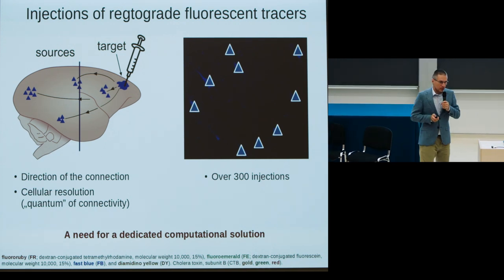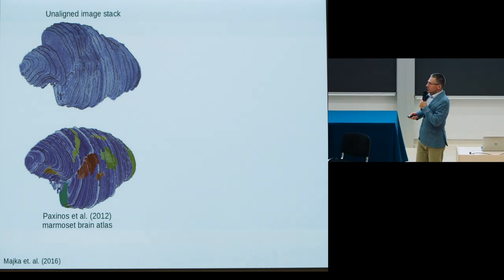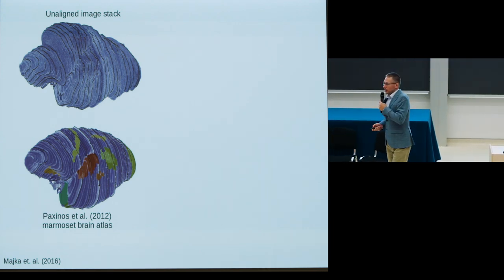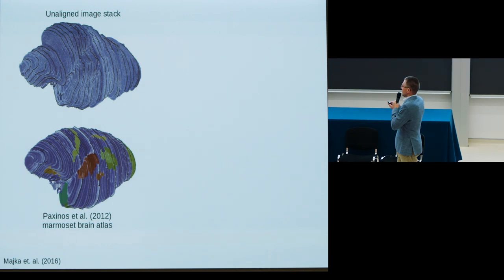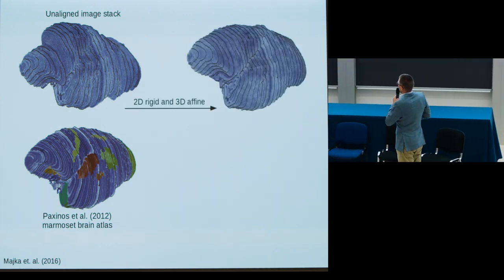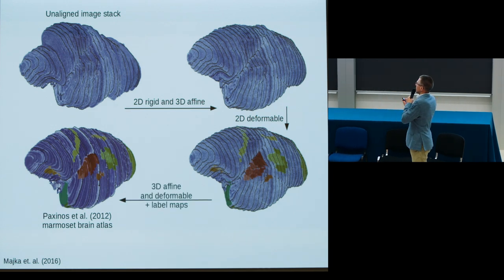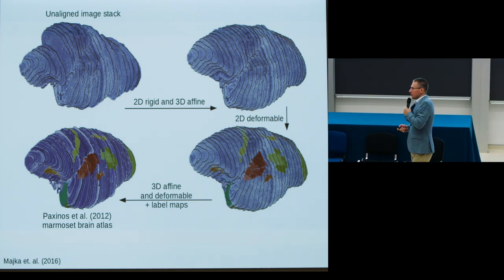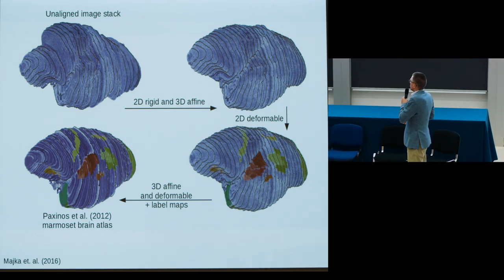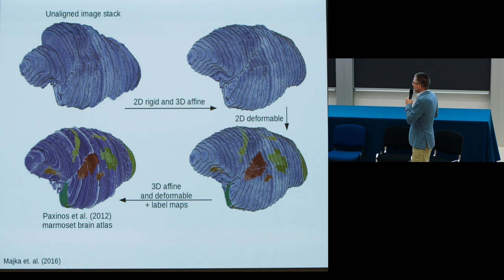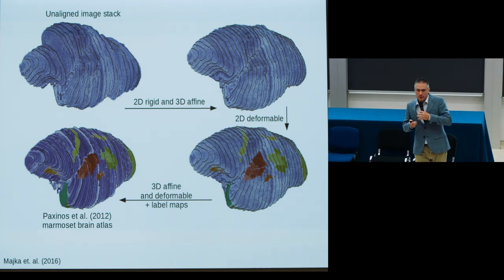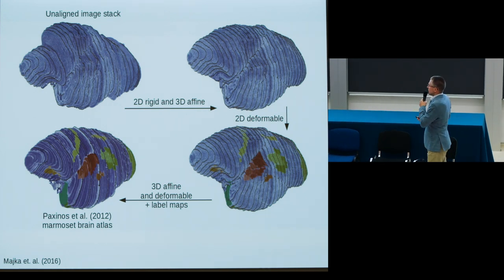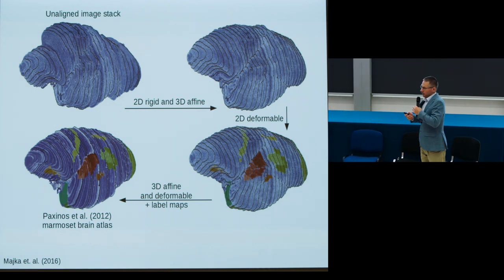The infrastructure behind the project is quite complex, but the single most critical step is mapping the experimental data set into the stereotaxic space of the reference brain atlas. This involves taking the unaligned stack, reconstructing it into what resembles a single hemisphere of the marmoset brain, which is further refined by deformable mappings, resulting in a much smoother 3D reconstruction with pronounced anatomical features. This 3D image is then mapped into the stereotaxic atlas with full 3D-to-3D mappings.